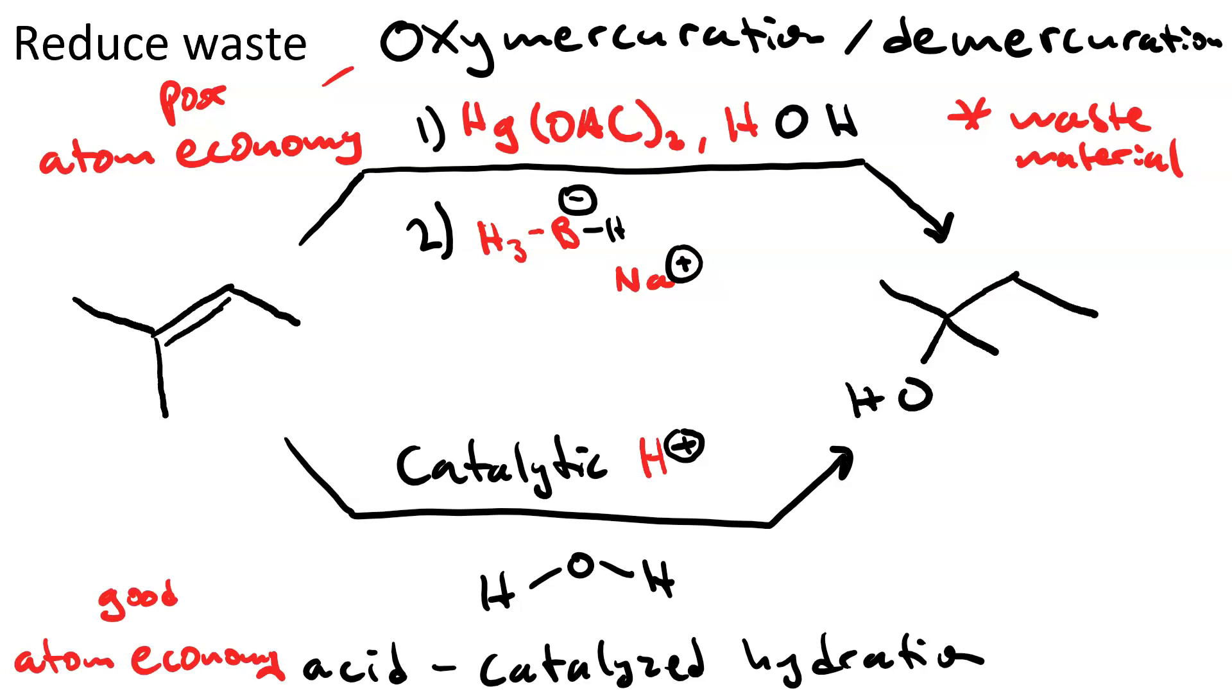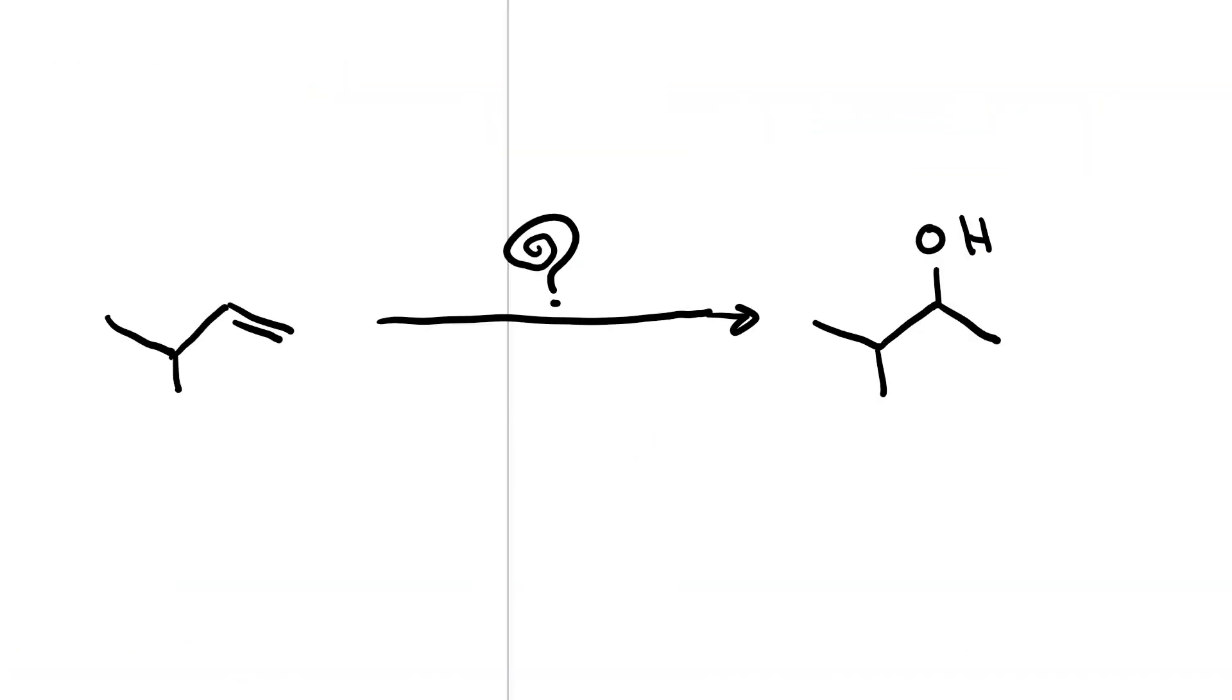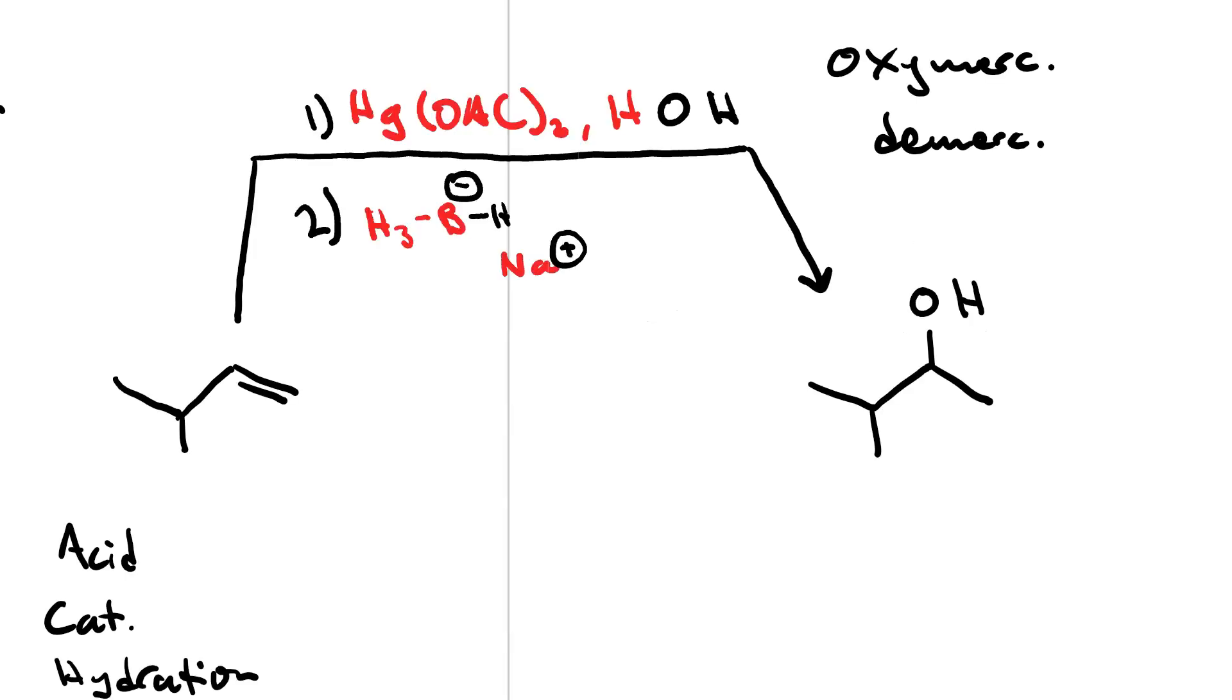However there is one case where oxymercuration demercuration is a greener option than acid catalyzed hydration. Say you were trying to do this synthesis. So maybe we should use acid catalyzed hydration. In the first step the pi bond acts as a base taking a proton from the hydronium and a secondary carbocation.